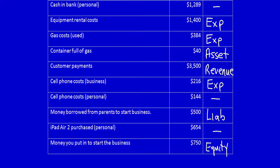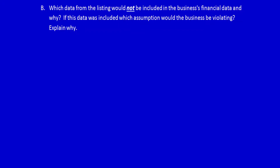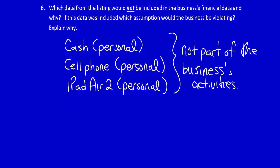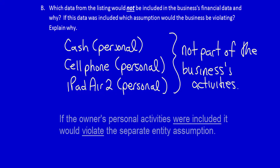Which data from the listing would not be included in the business's financial data and why? These three items — cash in bank personal, cell phone costs personal, and iPad Air 2 personal — would not be included in the business's financial data because they don't belong to the business. These are the activities of the owner, and the activities of the owner should not be mixed up with the activities of the business. If this data was included, it would be a violation of the separate entity assumption, which states that a business's activities will be kept separate from the activities of the owners. Otherwise, users of the financial statement would be misguided by the information because it would be a mixture of the business's and the owner's activities.